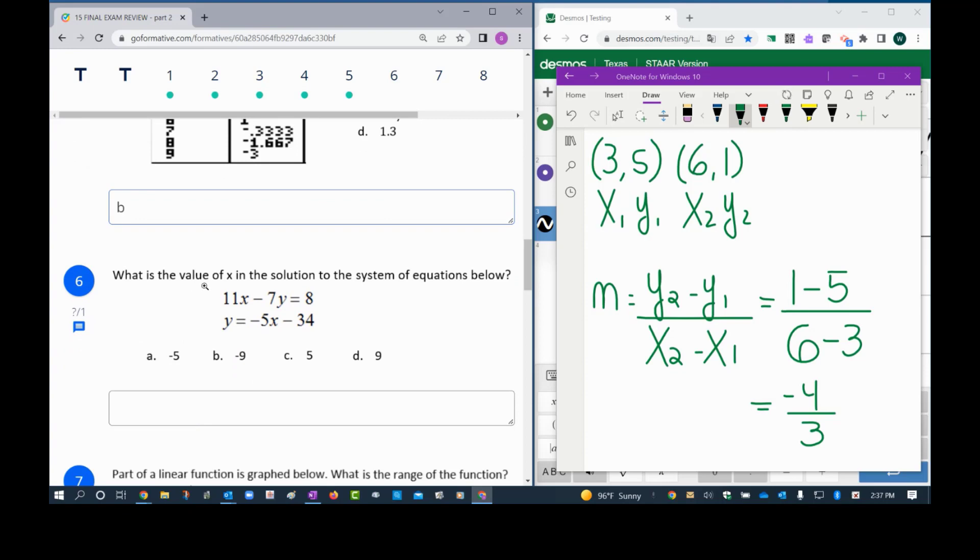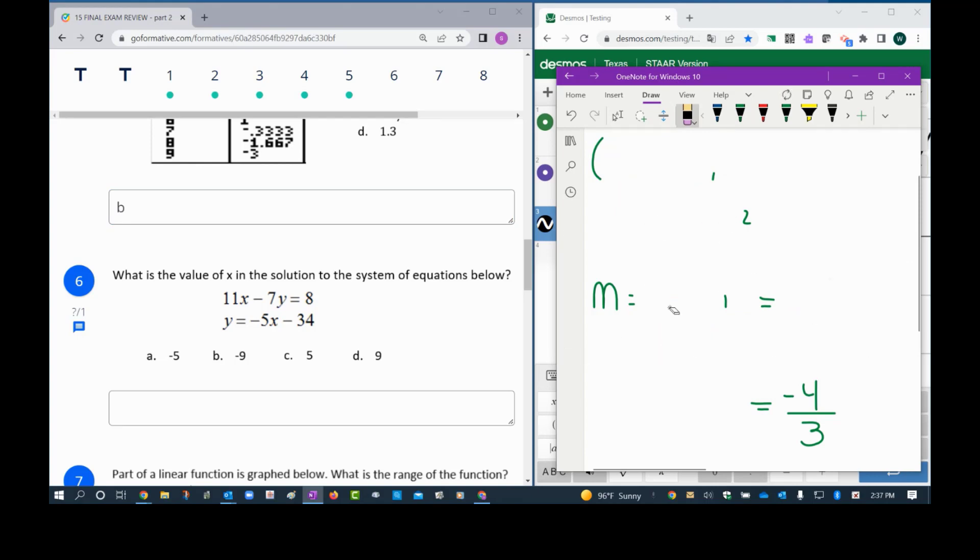So 1 minus 5 is negative 4. 6 minus 3 is 3. So this would be negative 4 thirds, which is letter B. Number five is a system of equations and is asking to find the value of x.